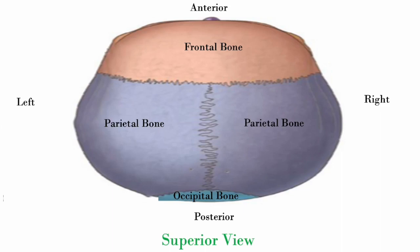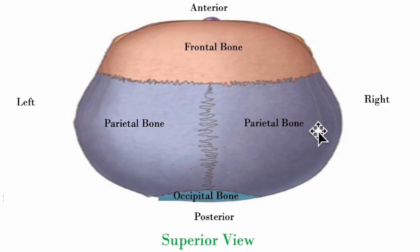We're looking at the top of the patient's head. They're lying down in front of us, supine. This is anterior — you can see their nose right here. Right, left, frontal bone, parietal bones, occipital bones here.